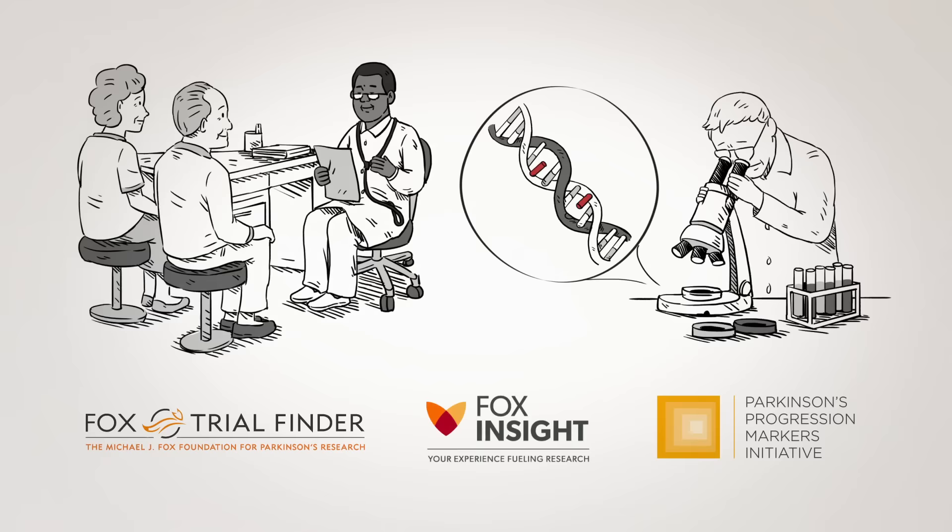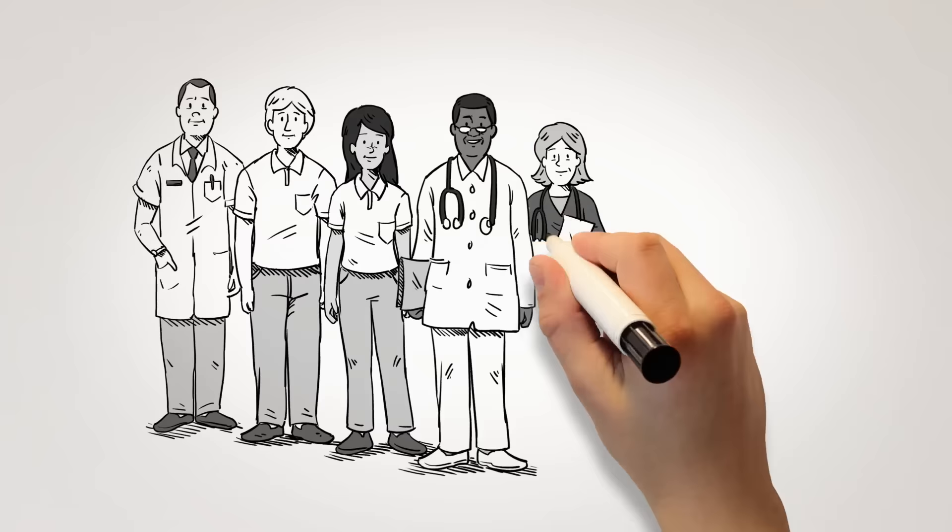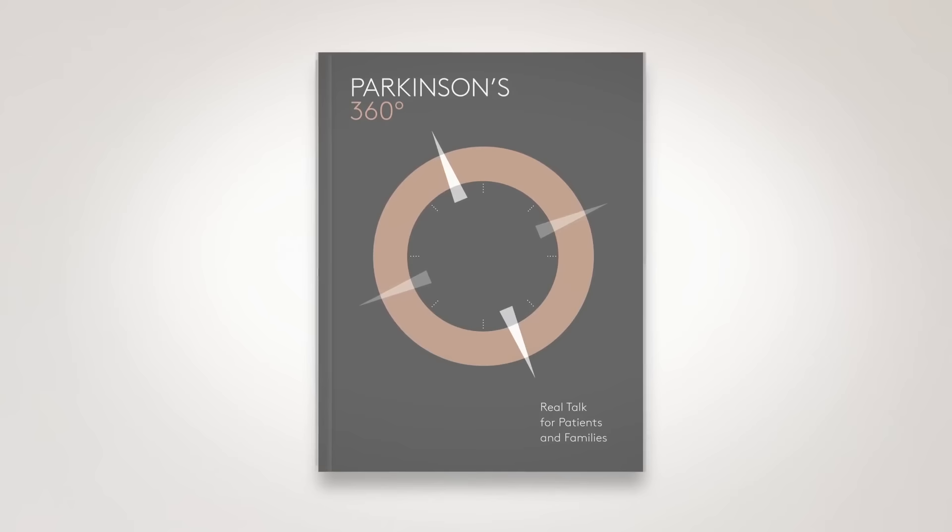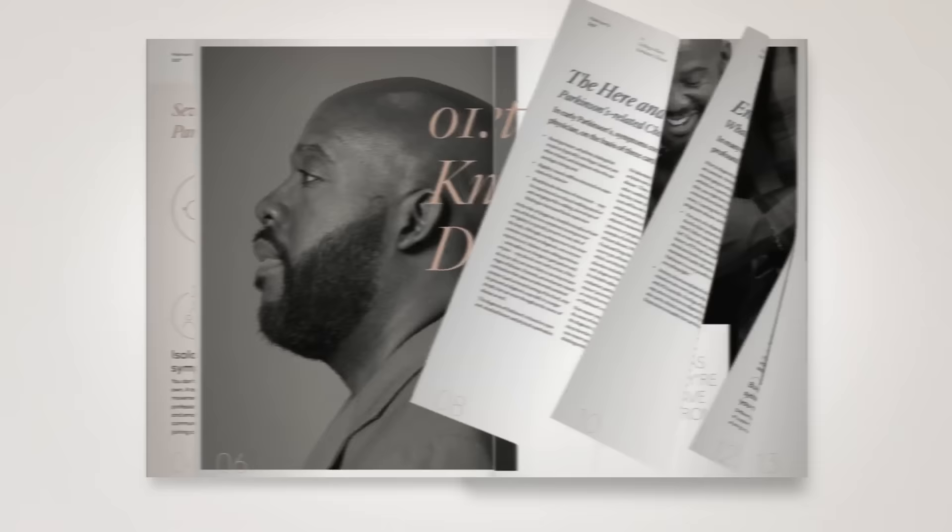Specialists can help you build the right care team and treatment regimen, but there's much more you can do to feel your best, like making sure to eat well, exercise, and stay connected to others. Check out our full Parkinson's 360 Toolkit for advice on living in the here and now with Parkinson's, as well as information on what to expect as Parkinson's unfolds over time.